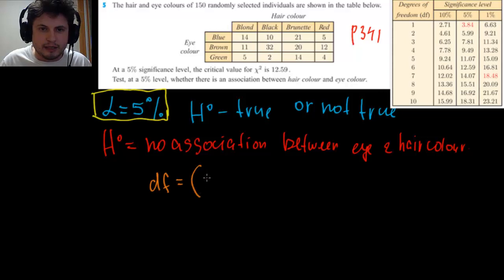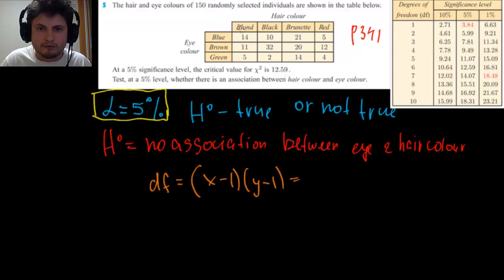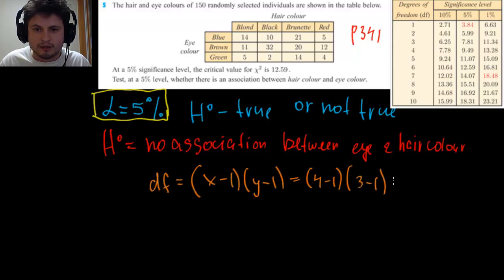Degrees of freedom equals (X minus one) times (Y minus one), where X is the number of columns and Y is the number of rows. Here we have four columns and three rows, so that's (4−1)(3−1) = 3 times 2, which is six. We have degrees of freedom of six.